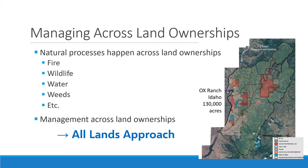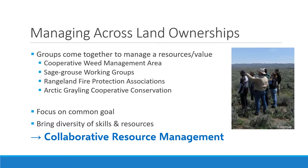One of the greatest challenges in land management is managing across land ownerships. Natural processes occur across land ownerships — fire doesn't stop at the boundary between BLM and private land. Wildlife don't stop; they don't know who owns the land they're living on. Water doesn't stop. Weeds move across equally no matter who owns the land. Natural processes pay no attention to land ownerships. So the idea of the all-lands approach is that management should also work across land ownerships.